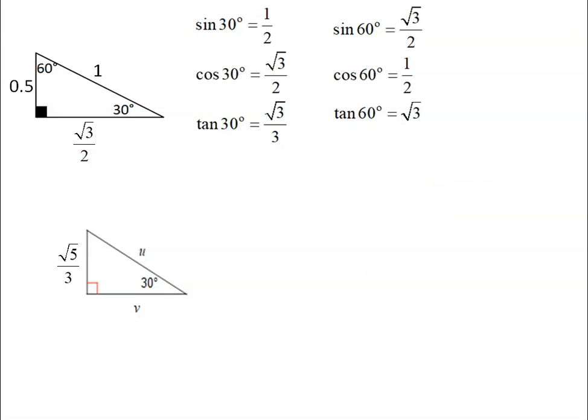And using b, I would do the same thing. But b is the adjacent, and root 5 over 3 is the opposite. So that's going to be tan. Tan 30 is root 3 over 3.